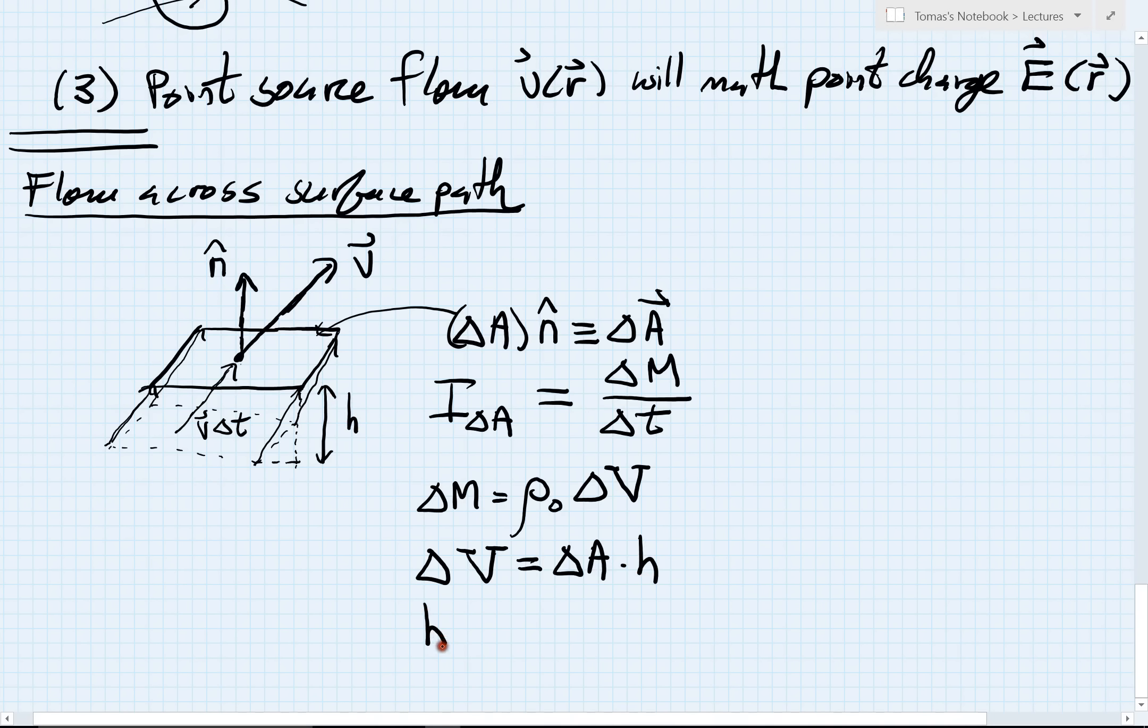That height, we're going to have to do a little bit of trigonometry. If I think about my right triangle here, the length of the hypotenuse has a length of the magnitude of the velocity times delta T. What I have to multiply that by is the cosine of this angle here, I'll call this angle theta. So the height is magnitude of V delta T times the cosine of theta.